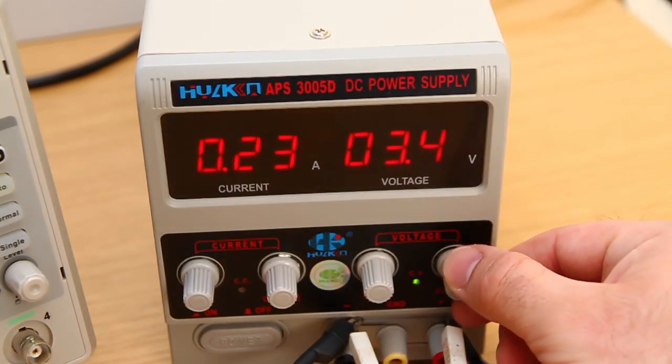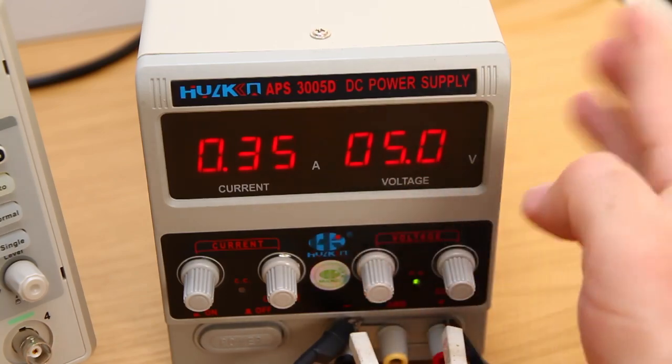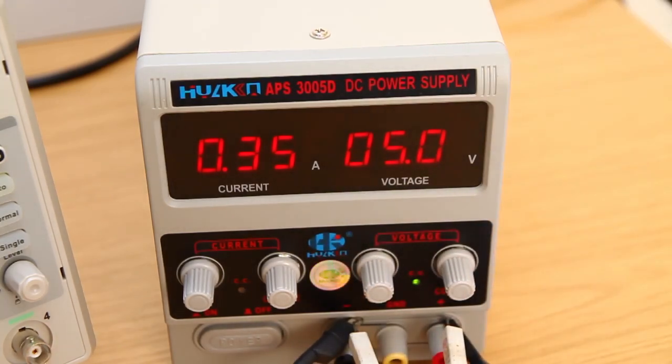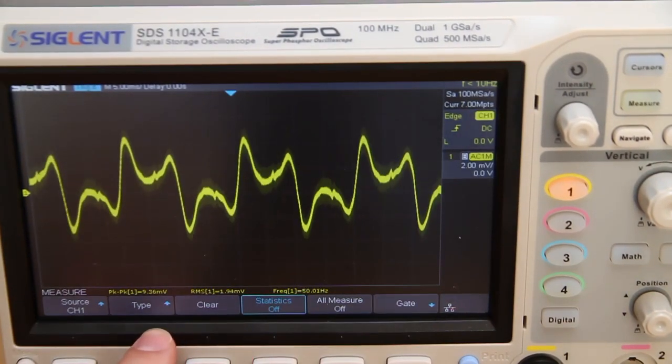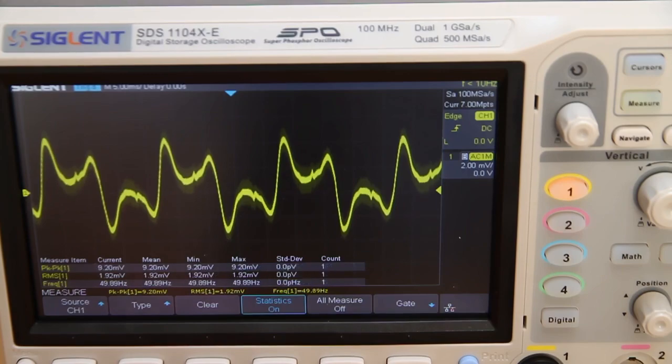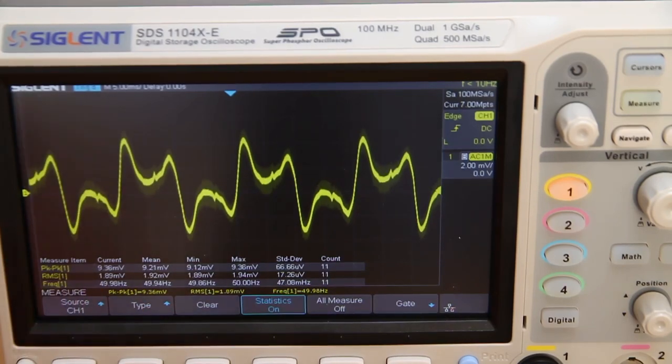So let's go to 5 volts. So at 5 volts, 350 milliamps drawn. And what do we have? Here, 1.9 millivolts and peak to peak 9 millivolts. Statistics show mean 1.9, peak to peak 9.